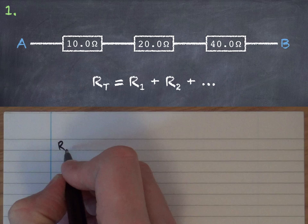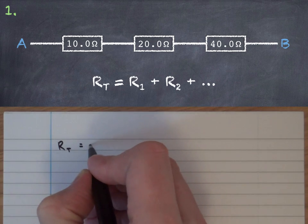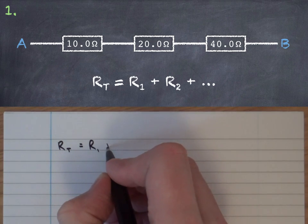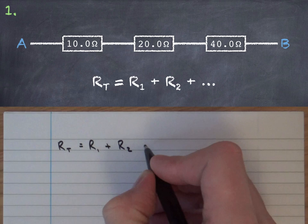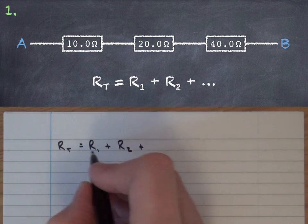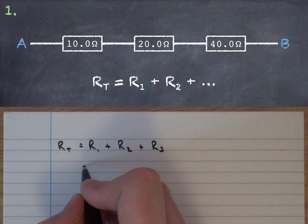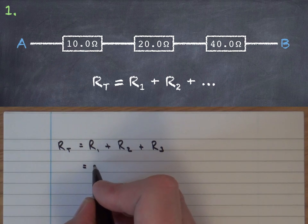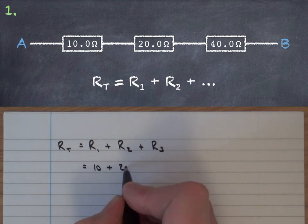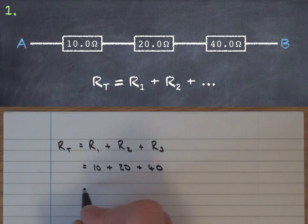In the first example we've got three resistors in series and of course we're using the equation on screen. But since we've got three resistors we're using RT as R1 plus R2 plus R3 and all we need to do after that is substitute the three values: 10 plus 20 plus 40 which is of course 70 ohms.